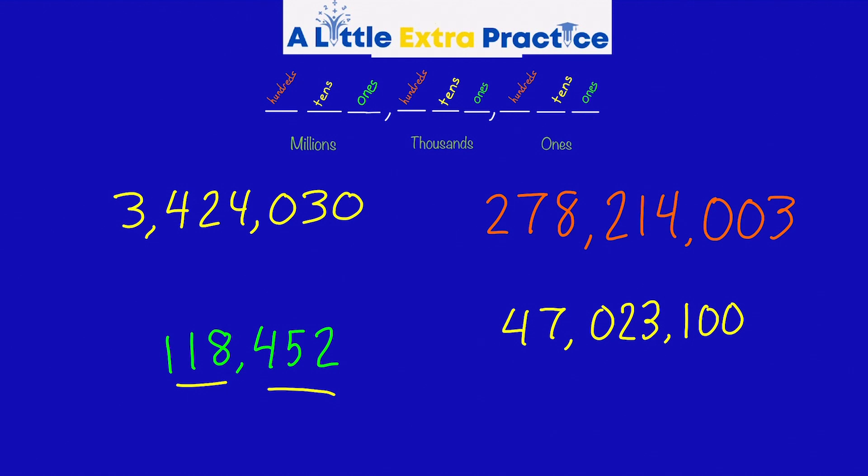The next one. I'm looking at this - this is the ones period, that's the thousands: 118,452.